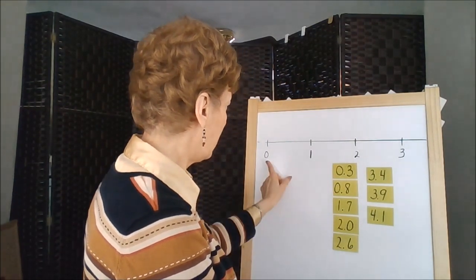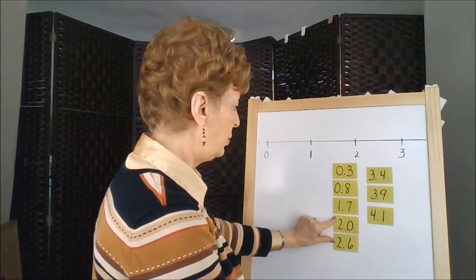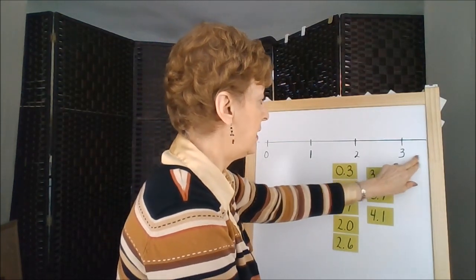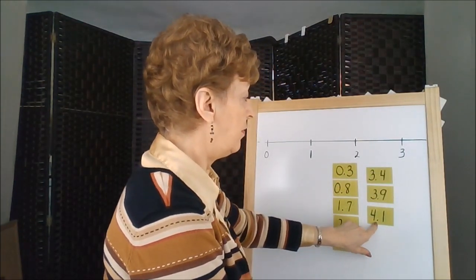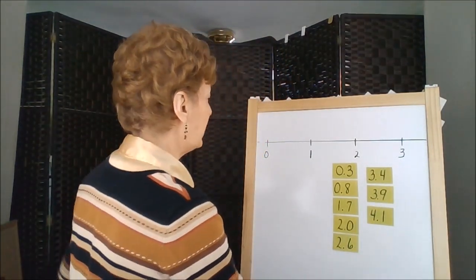Here's the zero decade. The ones would go in this decade, the twos would go in here somewhere, the threes here, and the four would be off the chart. So let's see if we can actually place these.